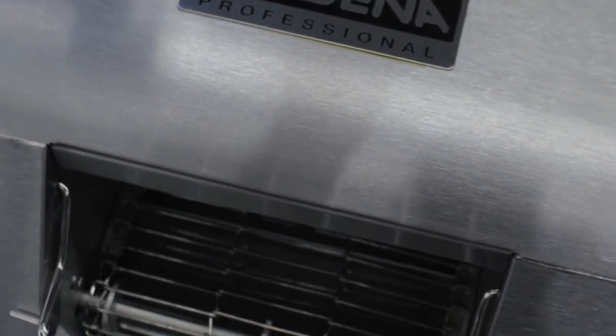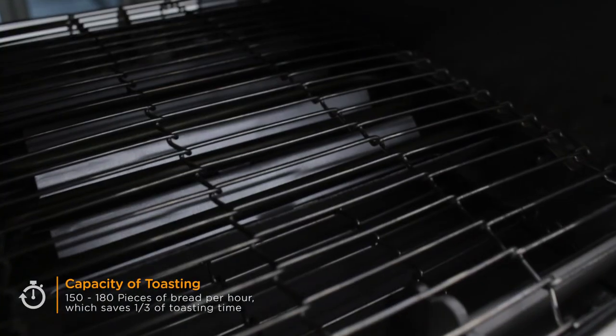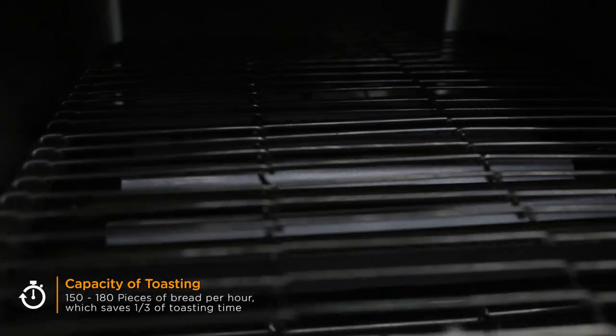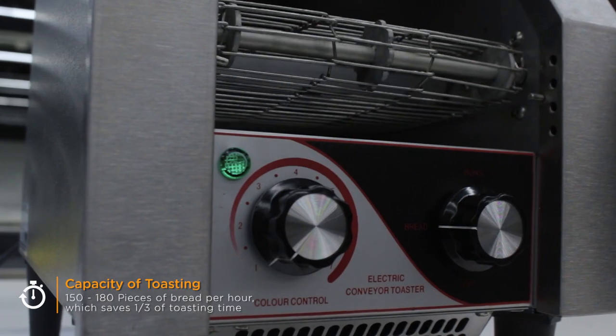The specialty of this device is the capacity of toasting 150 to 180 pieces of bread per hour, which will save one-third of toasting time with regular toasters.